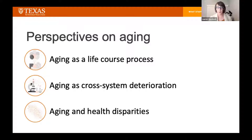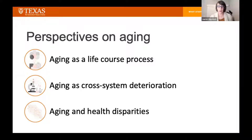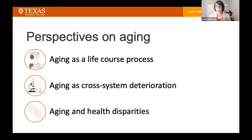There are three perspectives on aging where integrating biological and social science offers the most promise. The first is conceptualizing aging as a life course process, which suggests that later life health and disease outcomes typically observed in old age are actually rooted in exposures and experiences across the entire life course. To address aging outcomes we need to address their antecedents across the life course, yet it can be difficult to study aging in young populations that appear healthy — this is where biological measures are particularly powerful.